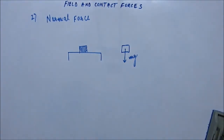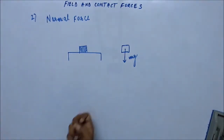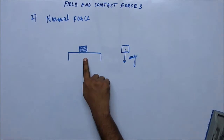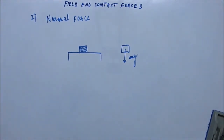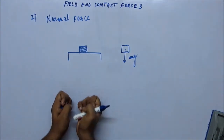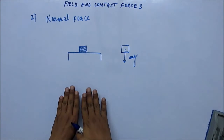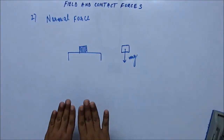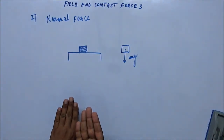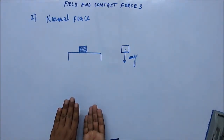The earth is pulling this block downward and the block is not going downward, so there must be some force preventing it from moving downward — that must be the force from the table. The surface is hard enough to stop the block, so it must be exerting some force upward. When the block presses the table, the table presses the block back upward.